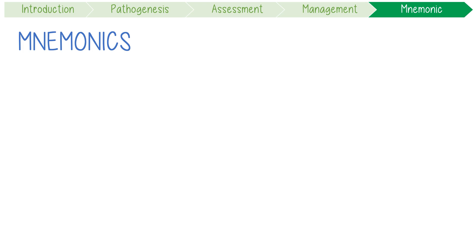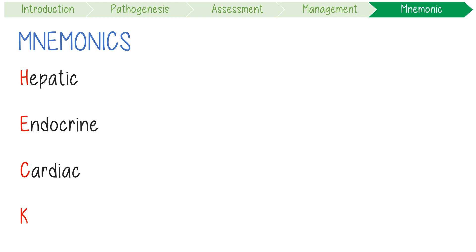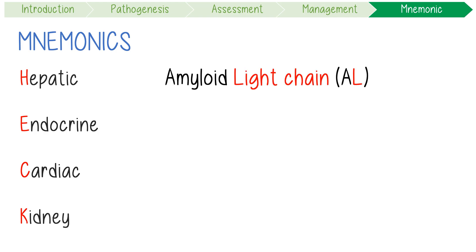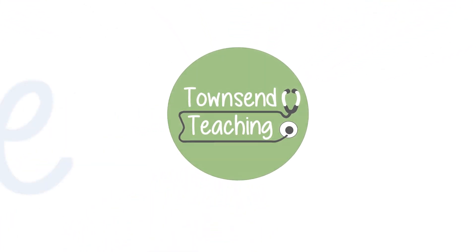Let's recap with some mnemonics. Systemic amyloidosis is often one heck of a disease, causing hepatic injury, endocrine damage, cardiac dysfunction, and renal impairment. Amyloid light chain, or AL, has a couple of classic features that occur roughly 10% of the time: a big tongue (macroglossia), ecchymosis, and peripheral neuropathies.